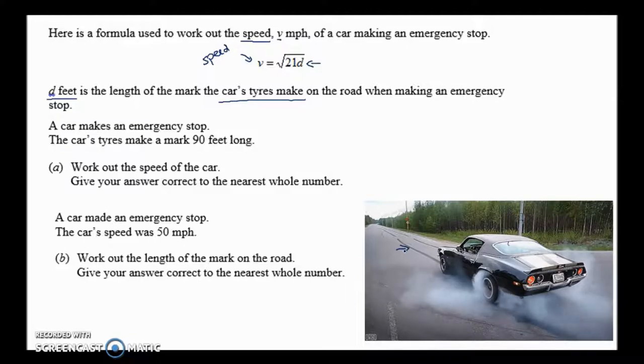A car makes an emergency stop. We're going to be doing it now, here's the situation. The car's making an emergency stop, the car tires make a mark 90 feet long, a 90 feet long skid mark. Obviously not this way around, the car would be at the other end. So we've got D is equal to 90, that's how long our skid mark was, a tire mark.